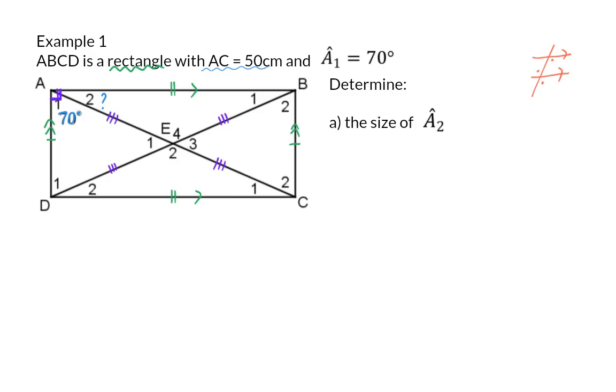For our first question, to determine the size of angle A2, we already know that angle A1, which is 70, and angle A2 together should equal 90 degrees, which means that angle A2 should be 20 degrees. Remember to always supply a reason for any statement that you make in geometry, and in this case, that will be angles of a rectangle.